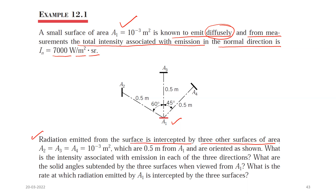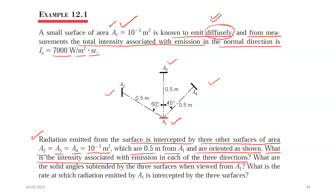Radiation emitted from the surface is intercepted by three other surfaces of areas a2 = a3 = a4 = 10⁻³ m², which are 0.5 m from a1 and oriented as shown in the figure. For part a, since a1 emits diffusely, the intensity is the same in all directions — the answer is 7000 W/m²·sr.